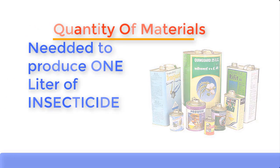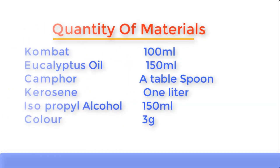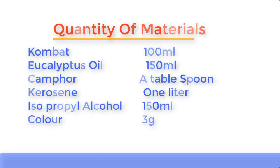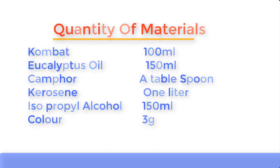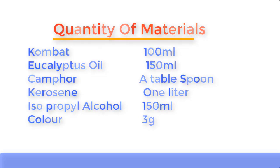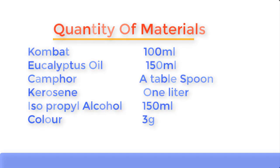Now let's establish the quantity of materials needed to produce one liter of insecticide: compact 100 ml, eucalyptus oil 150 ml, camphor one tablespoon, kerosene one liter, isopropyl alcohol also known as IPA 150 ml, and color three grams.